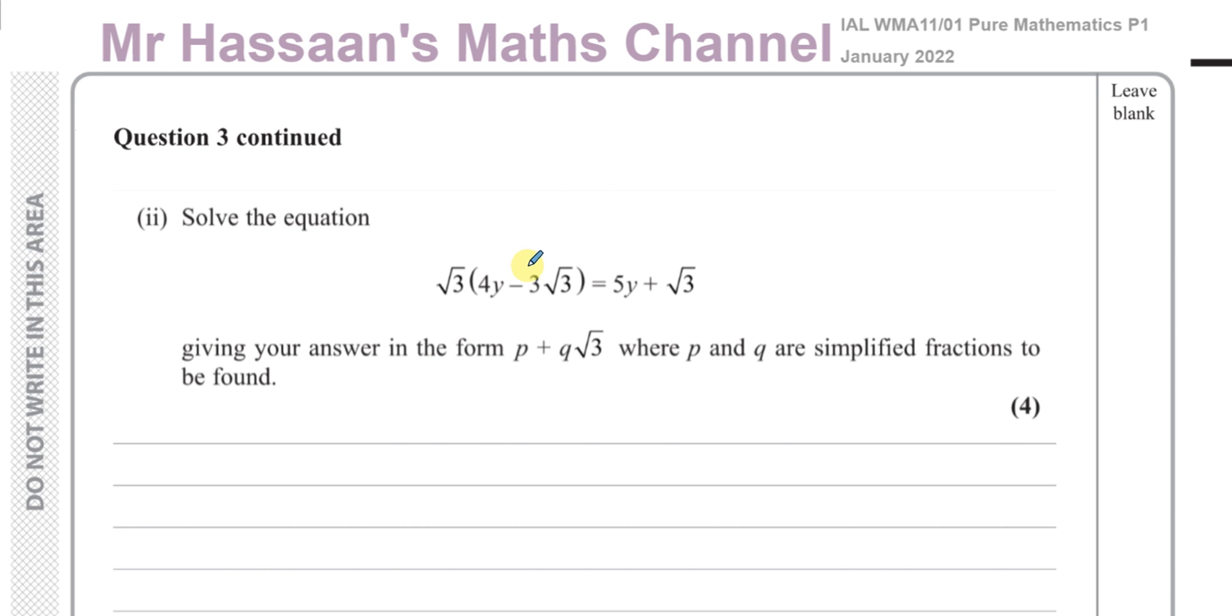For part 2, it says solve the equation: √3(4y - 3√3) = 5y + √3. If I want to solve this equation, I want to end up with y equals something. So I need to bring the y's together. I'm going to expand the bracket on this side so the y term is free. This will be 4√3 times y minus 3 times √3 times √3, which is 3 times 3, which gives you 9 because √3 times √3 gives you 3 times 3. That will give you 9 equals 5y + √3.